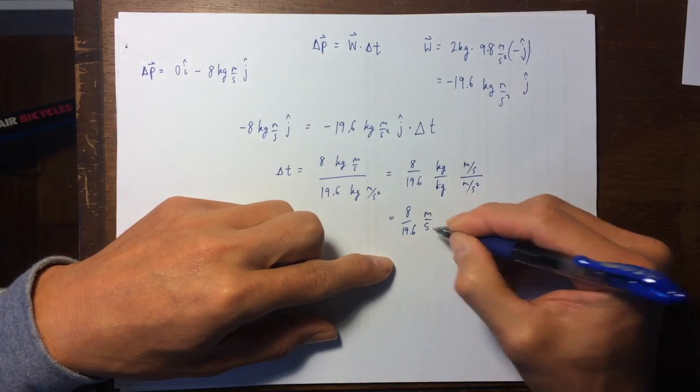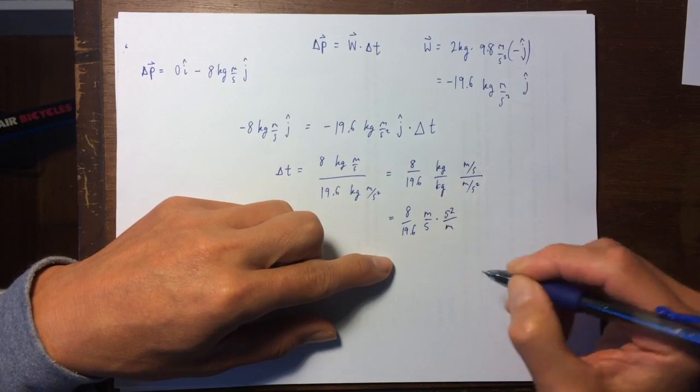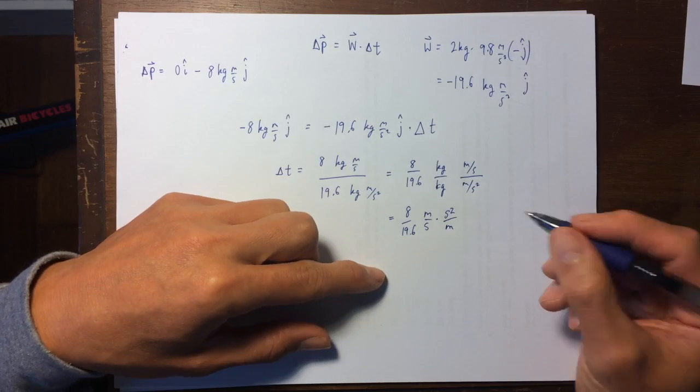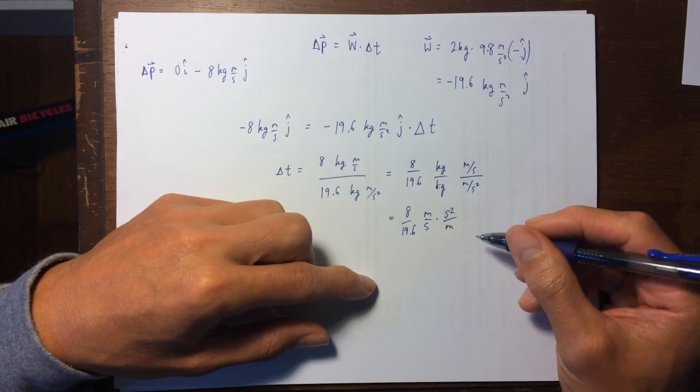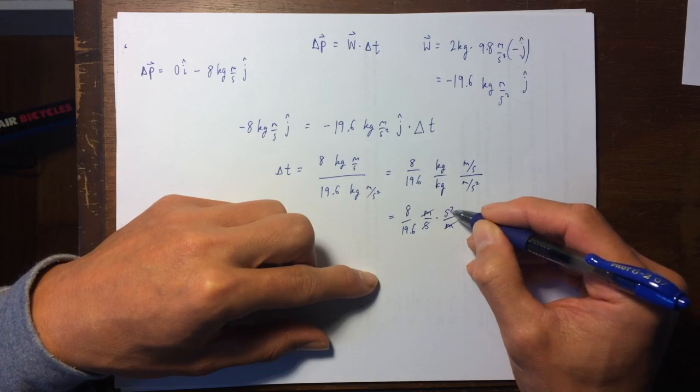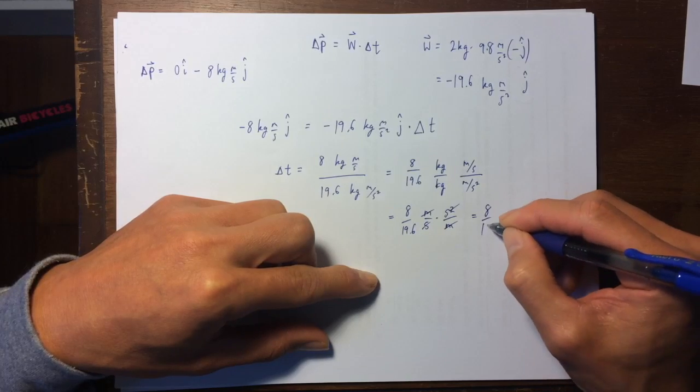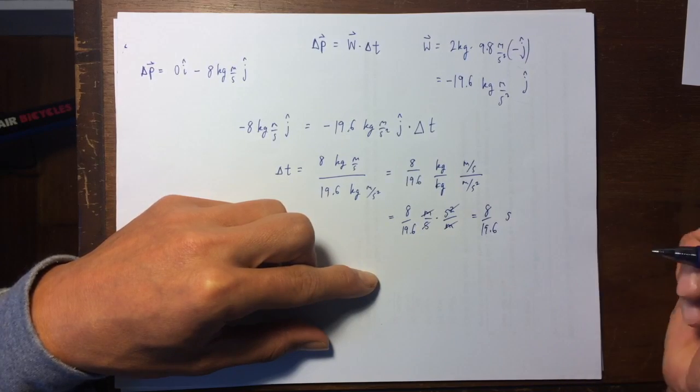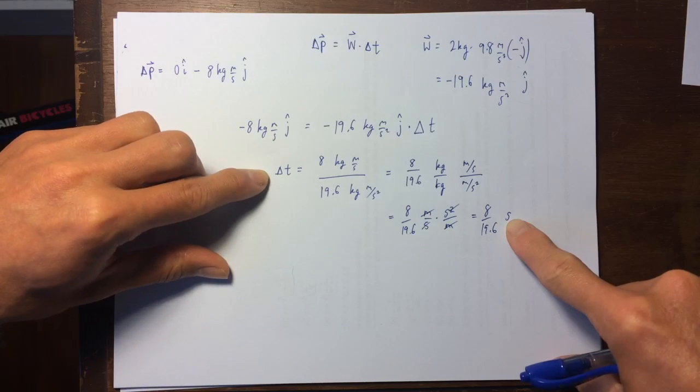So this is eight over nineteen point six kilograms knock each other out, meters per second times the inverse of the bottom unit. When you divide by a fraction, you have to multiply by the inverse of the denominator, so you can see meters, meters knock each other out, seconds knocks out one of the seconds on the top, eight over nineteen point six seconds, which is what we should get.